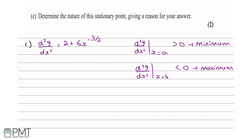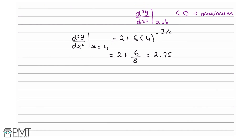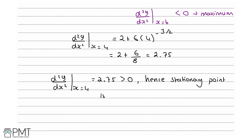We plug x equals 4 into the second derivative expression: 2 plus 6 times 4 to the minus 3 over 2 equals 2 plus 6 over 8, which equals 2.75. Since d squared y by dx squared at x equals 4 equals 2.75, which is greater than 0, hence the stationary point is a minimum.